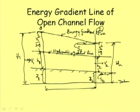To summarize the energy concept in open channel flow: with the datum as reference, from the datum to the channel bed is potential energy; from the bed to the water surface is pressure energy; and above the water surface we represent kinetic energy. The line joining energy levels at upstream and downstream points is the energy gradient line, and the line joining Z+H at upstream and downstream points is the hydraulic gradient line.